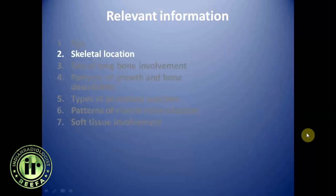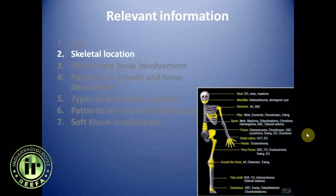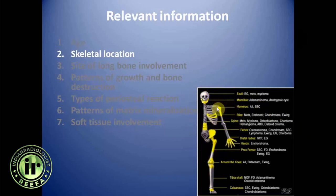Location in the skeleton is very important because every tumor has three or four favorite locations within the skeleton. There are certain tumors more predominantly seen in the axial skeleton and certain tumors more commonly seen in the appendicular skeleton. So we need to know the favorite location of certain tumors.